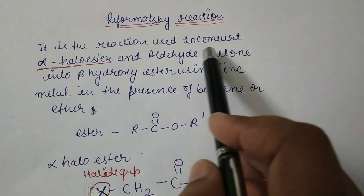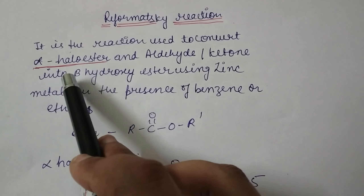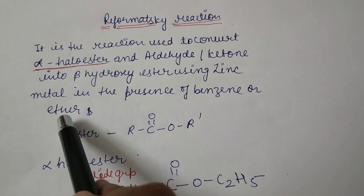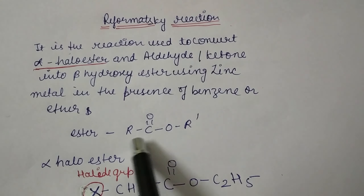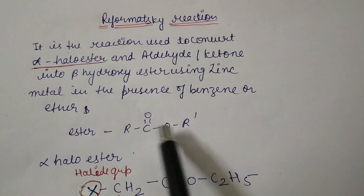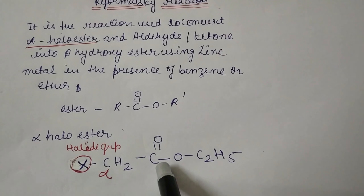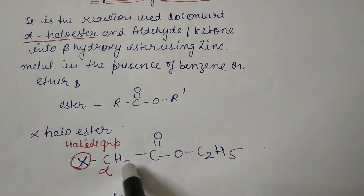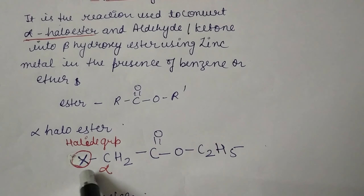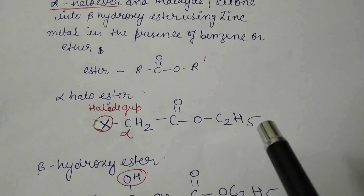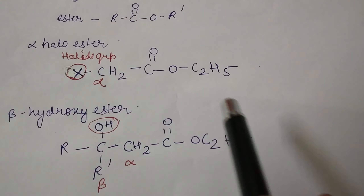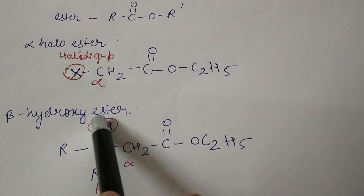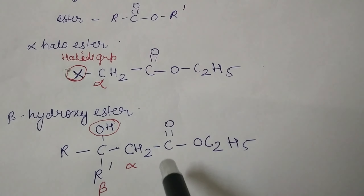Reformatsky reaction is the reaction used to convert an alpha-haloester and an aldehyde or ketone into a beta-hydroxy ester using zinc metal as a catalyst in benzene or ether solvent. Alpha-haloester means an ester with a halide group on the alpha carbon. The product, beta-hydroxy ester, has a hydroxy group present on the beta carbon relative to the ester functional group.